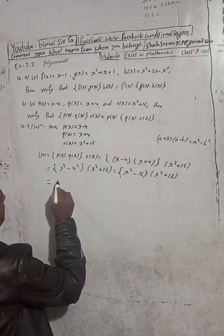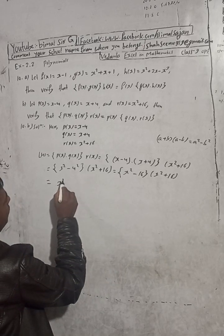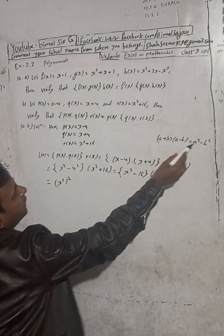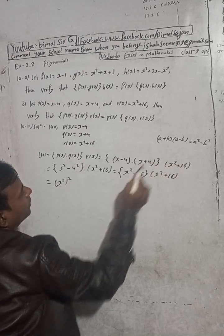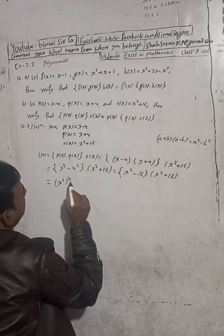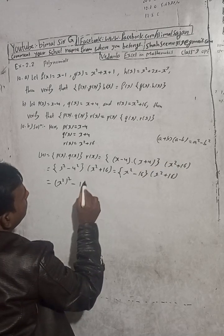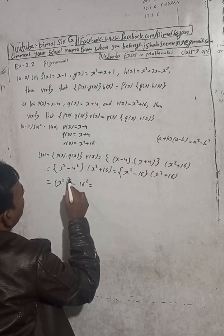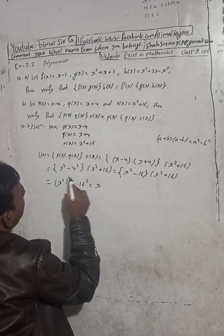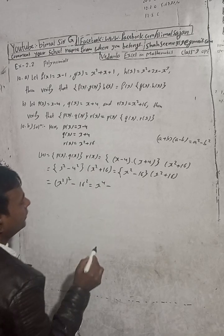This is the formula for this: a plus b into a minus b, so the formula for this is a square minus b square. This is the formula we have to apply here. So this is curly bracket. X to the power 2 to 4 and minus 16 to the power 2.